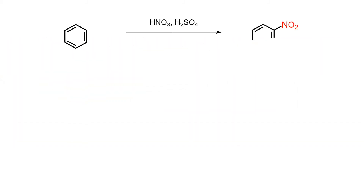When benzene is treated with a mixture of nitric acid and sulfuric acid, electrophilic aromatic substitution occurs and nitrobenzene is formed.